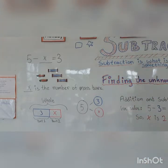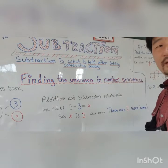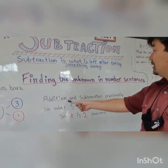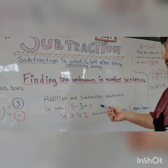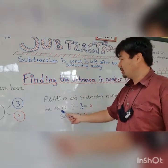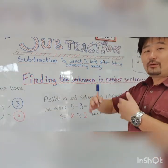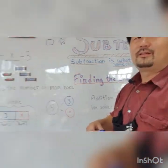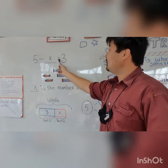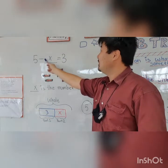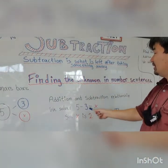So let's look at the addition and subtraction relationship. So what is that relationship? Let's solve it. From the start you had 5 minus X equals 3. So then you switch places with the X and the three. You take 5 minus 3 equals X.